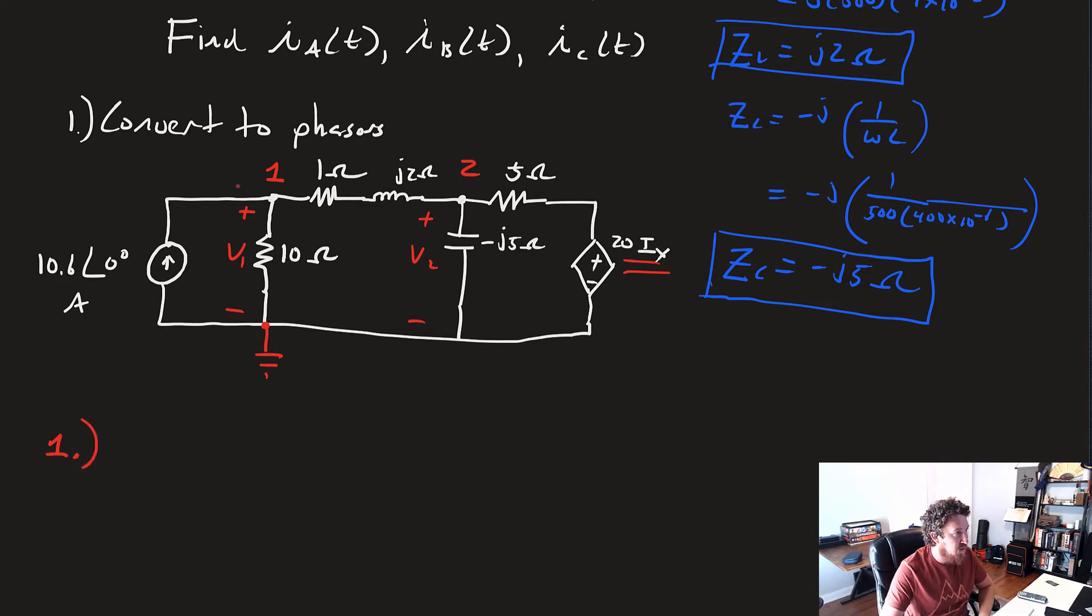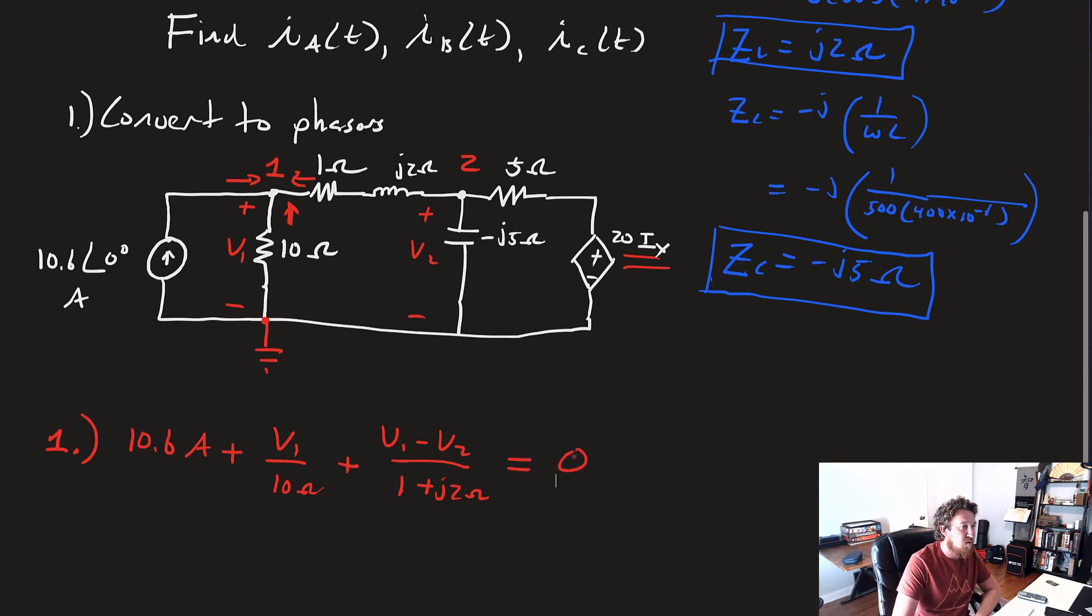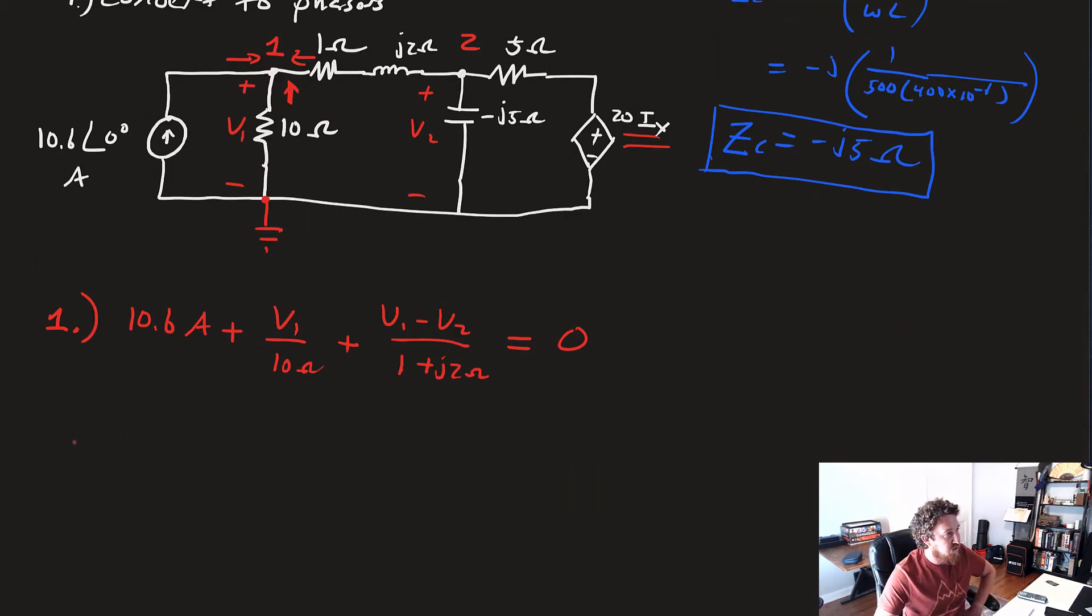The first equation is for this first node. We're looking at all the currents coming into the node. That first one is 10.6 amps plus V1 over 10 ohms. This current here, and then coming from 2 to 1, we'll have V1 minus V2 over 1 plus J2 omega, and that equals 0.